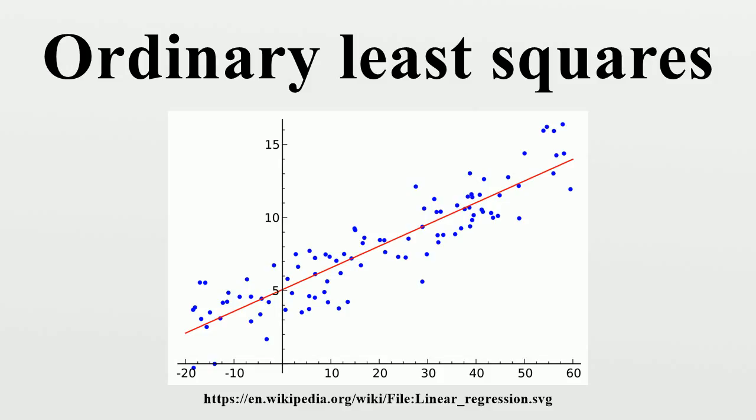No linear dependence: The regressors in X must all be linearly independent. Mathematically it means that the matrix X must have full column rank almost surely. Usually, it is also assumed that the regressors have finite moments up to at least second. In such case the matrix Qxx equals E(x^T x / n) will be finite and positive semi-definite.